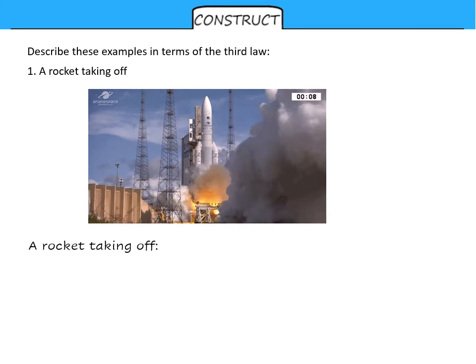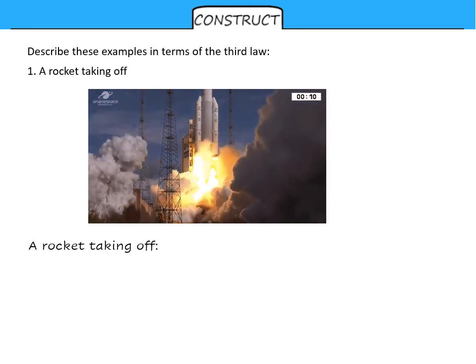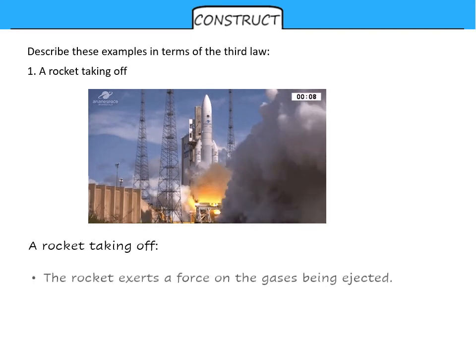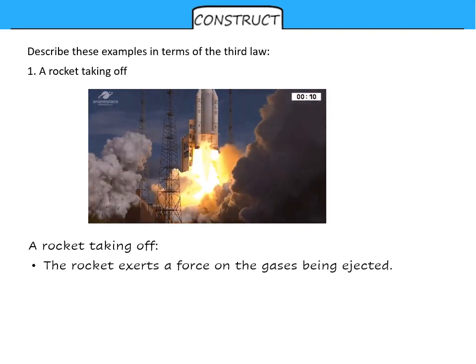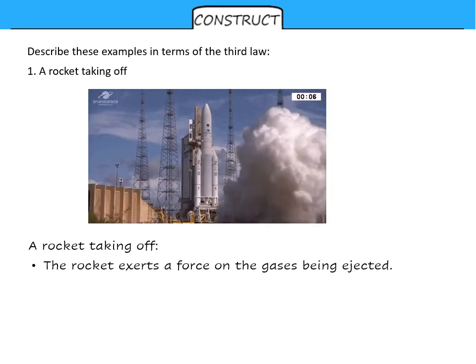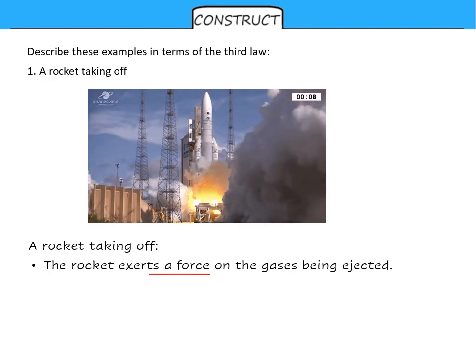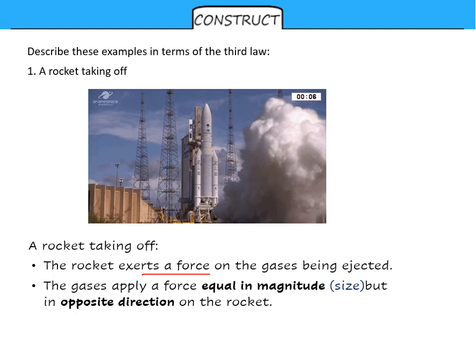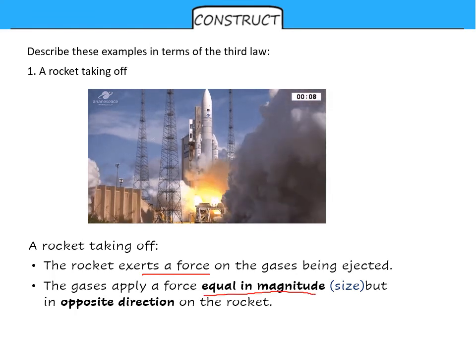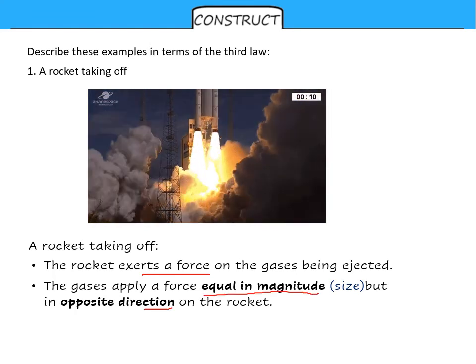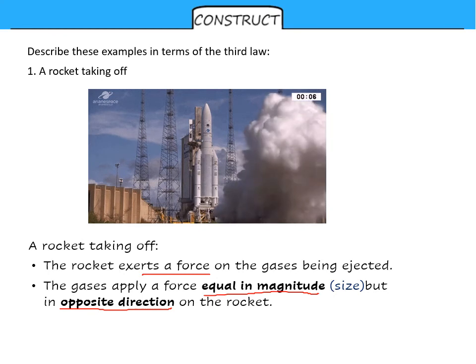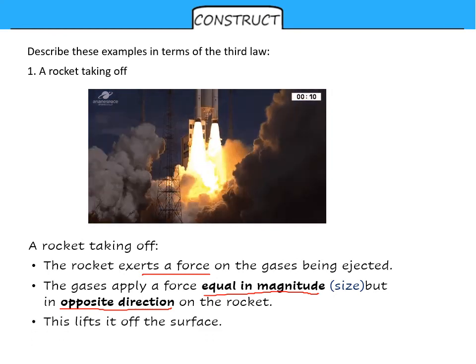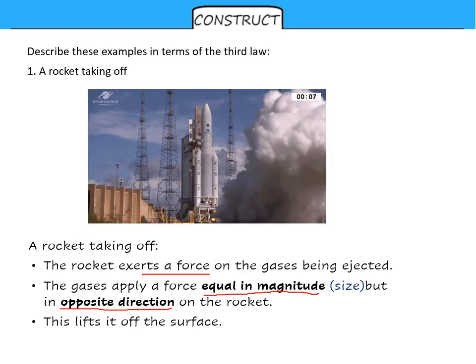So for the rocket, again we've had this example in previous slides with a rocket taking off. The rocket exerts a force, it pushes on the gases being ejected, it pushes on them. And the gases apply a force which is equal in size or magnitude and in the opposite direction to the rocket. This lifts the rocket off the surface and pushes the gas down.